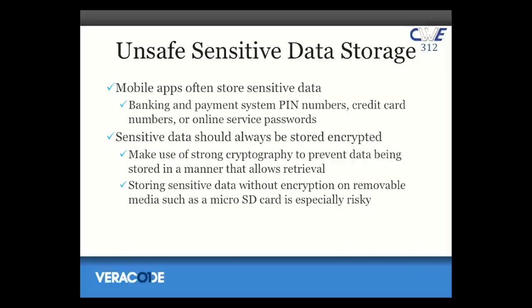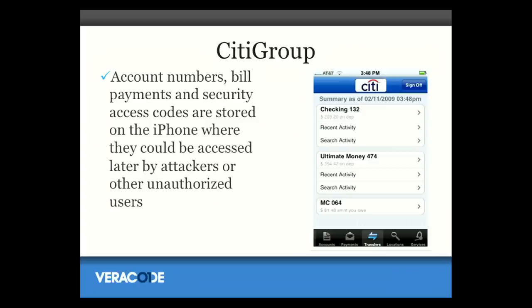The next category is unsafe sensitive data storage — where developers just take something like a PIN, account number, or password and store it in the clear on the device. Even worse, they might store it in an area on the phone that's globally accessible like the SD card. We even saw this happen in a Citigroup application — their online banking application stored account numbers insecurely, just in the clear. So if you lost your device, essentially you lost your bank account. This is why I personally don't do banking on my iPhone — I think it's too risky right now. Skype did the same thing; they were storing username, password, and account balance information in the clear on the mobile device.